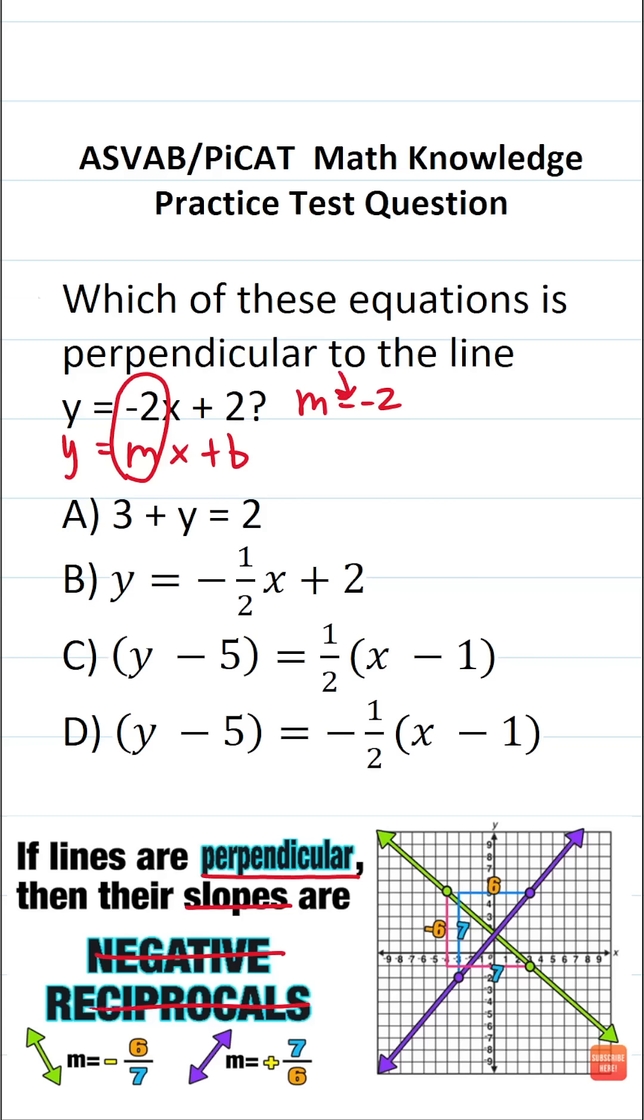So our given slope is negative 2. We've got to find the negative reciprocal of that. And to do that, I'm first going to express negative 2 as a fraction by placing it over 1. Again, our perpendicular line is going to be the negative reciprocal of that.